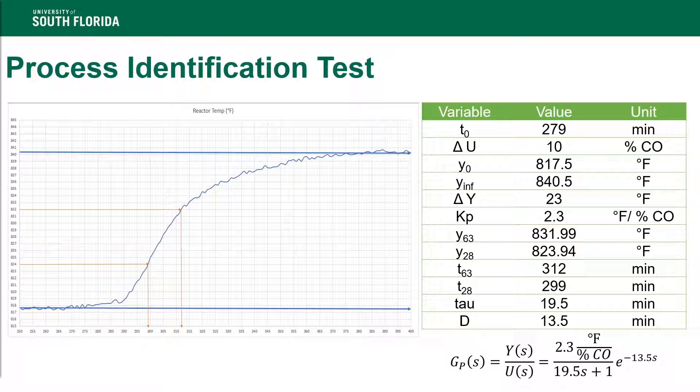It is important to note that for this step, the step change was made during a time when the primary disturbance, the ambient temperature, was small. This allowed us to graph the preceding reaction of the system based on our step change.